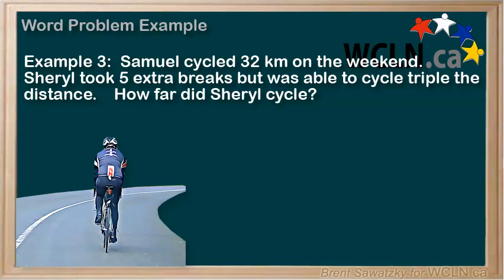Example 3. Samuel cycled 32 kilometers on the weekend. Cheryl took five extra breaks, but was able to cycle triple the distance. How far did Cheryl cycle?